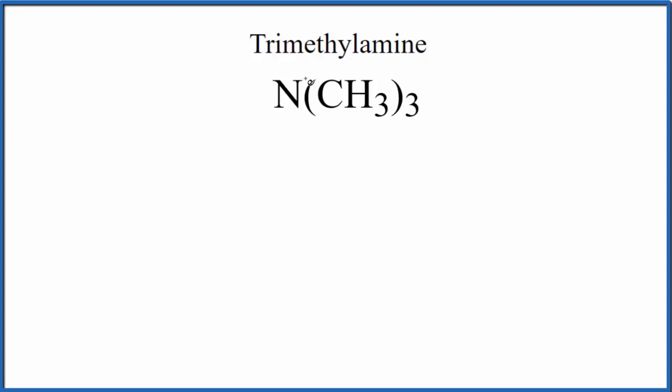So to draw the Lewis structure, we'll put nitrogen at the center, and then CH3, that's our methyl group. We have three of these CH3s, so we'll put a C here that has three hydrogens around it. Let's put another one over here with three hydrogens around it, and we'll put one here and squeeze in three hydrogens around it.